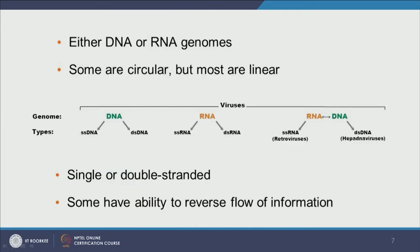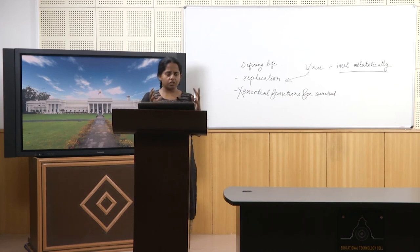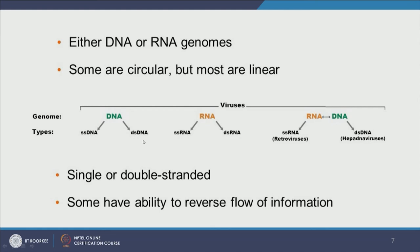Viruses can have both DNA and RNA. Some viral genetic material is arranged in circular form but most is linear, though even linear viral DNA is tightly packed in a convoluted 3D conformation. Viruses can be classified as DNA, RNA, or RNA-to-DNA viruses. DNA viruses can be single-stranded or double-stranded, and similarly RNA viruses can be single-stranded or double-stranded. Some rare viruses like retroviruses and hepadnaviruses can actually switch from RNA to DNA and back.